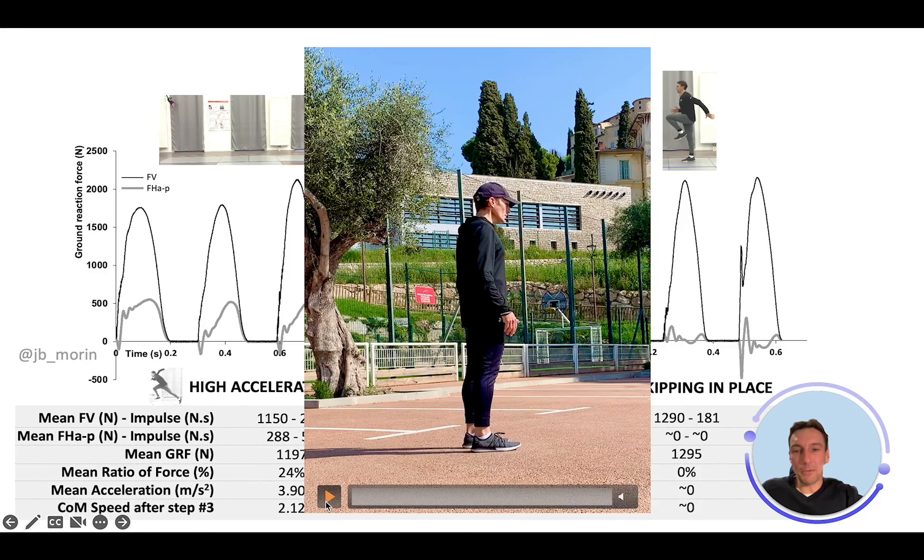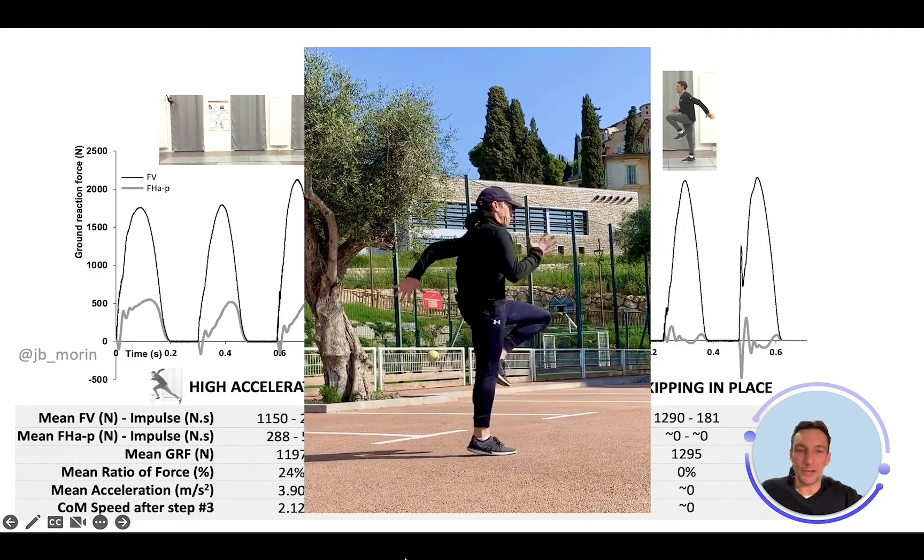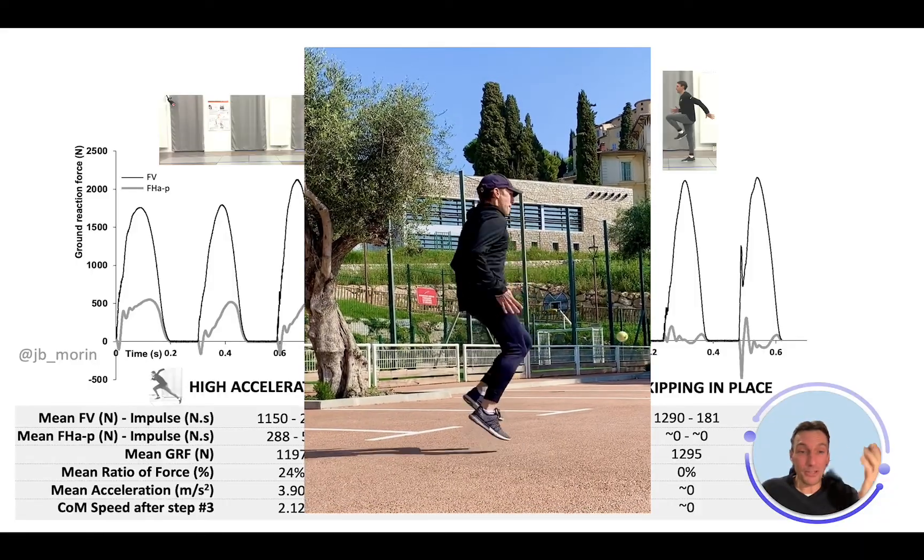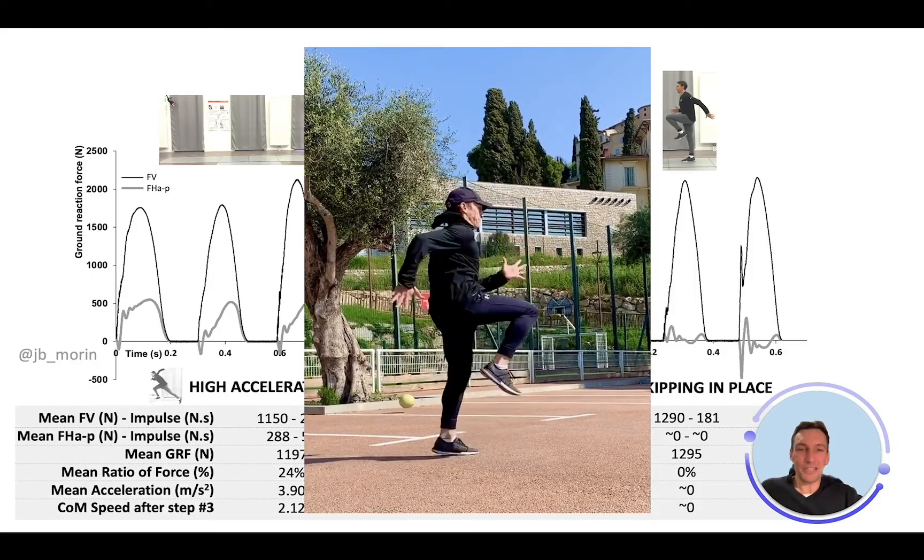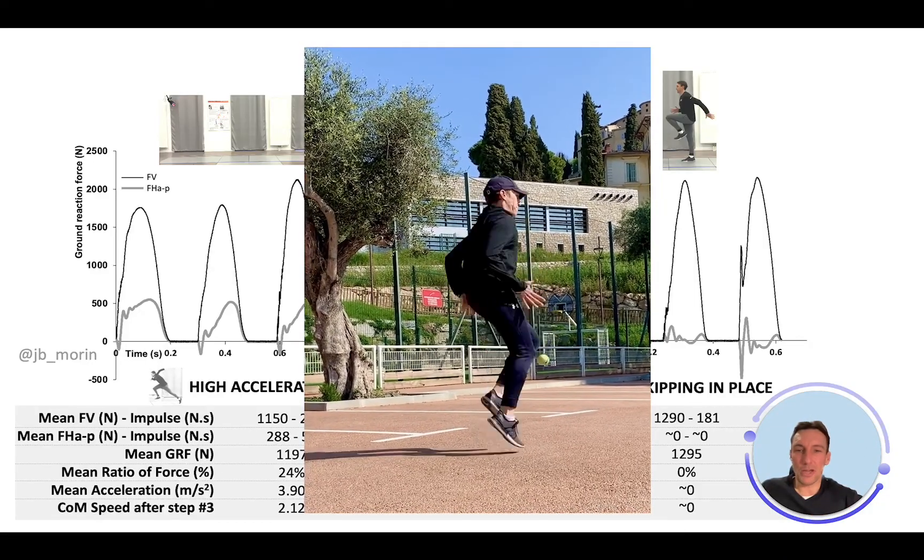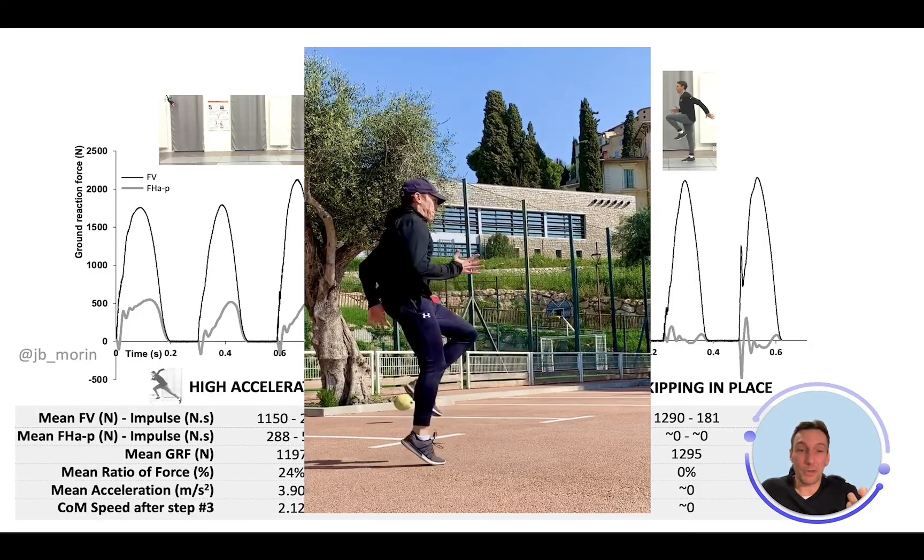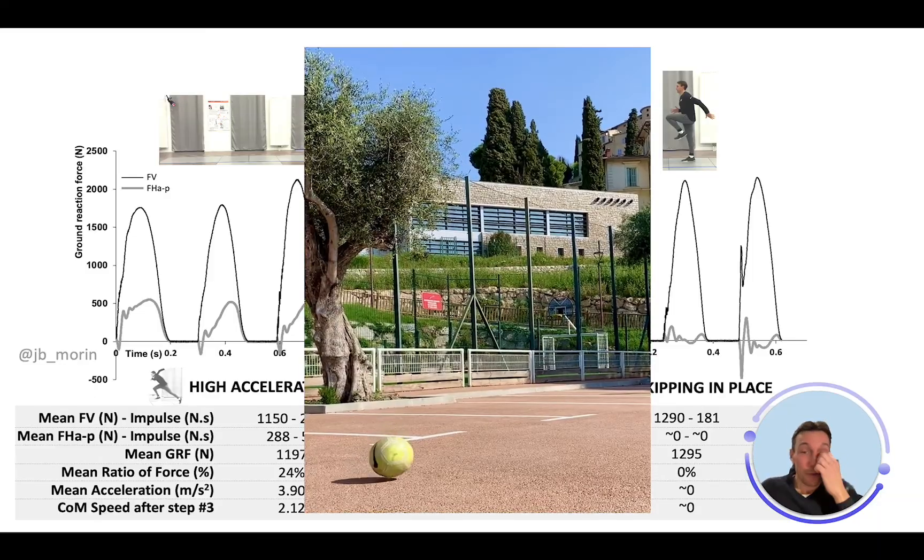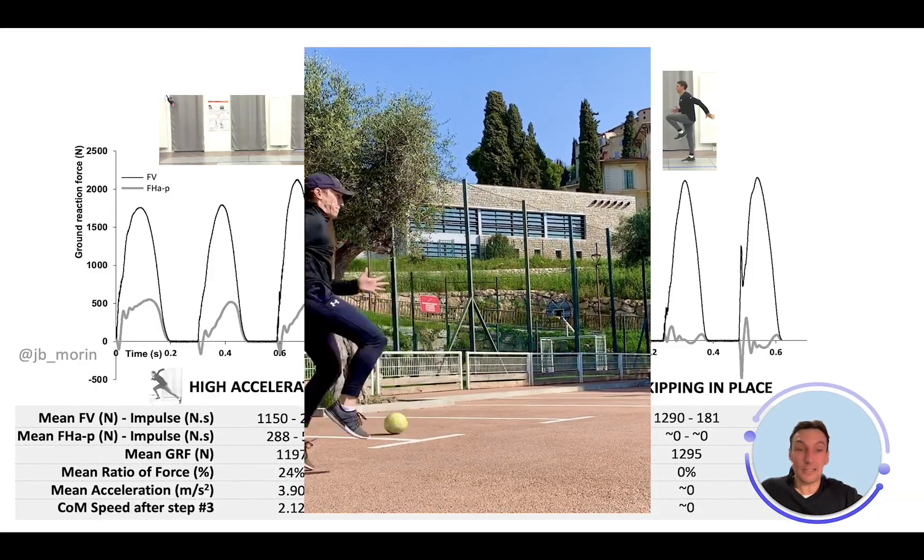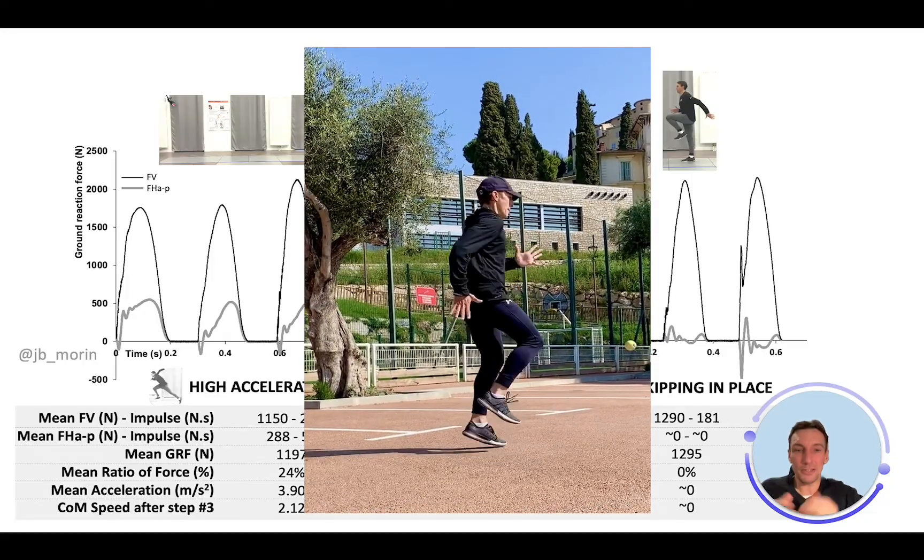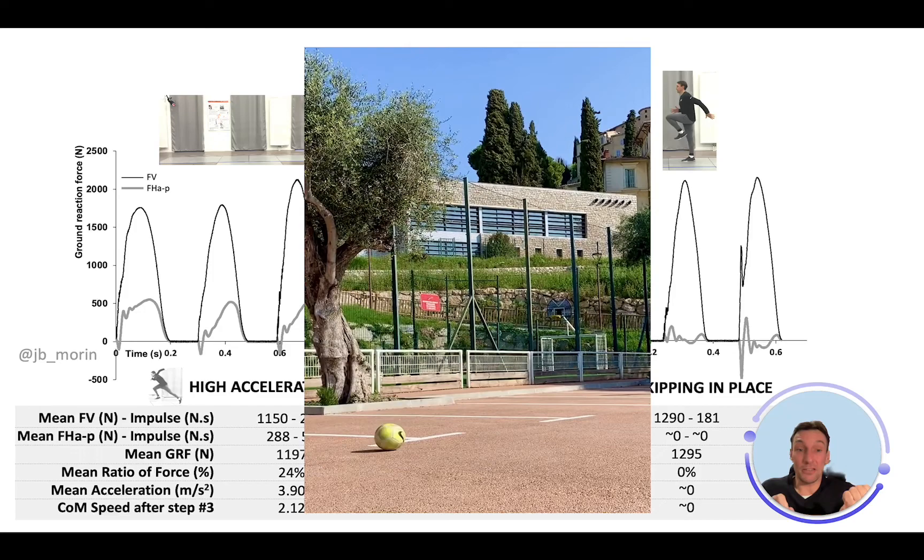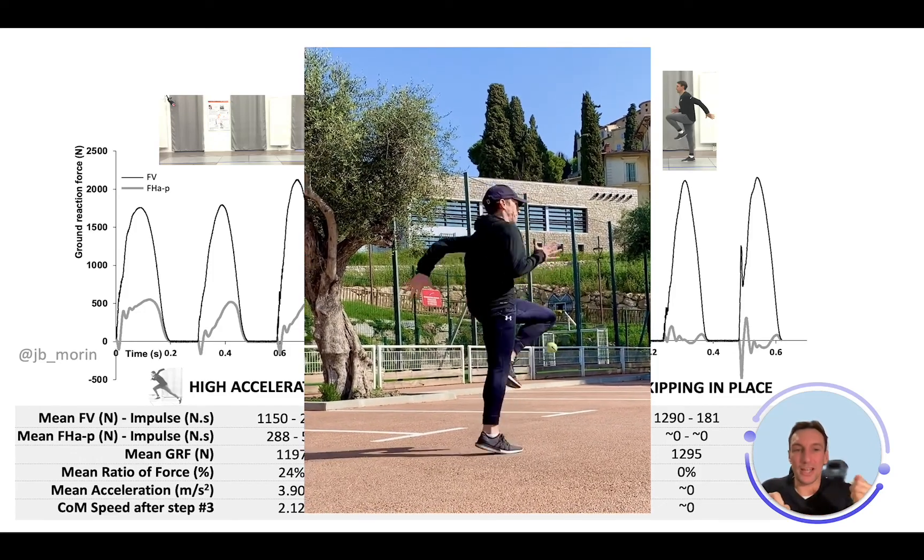I won't go back to the extreme example I showed during the COVID period where I'm not even skipping in place, but actually skipping backwards. There's a huge vertical component of the ground reaction force applied, but that's not what matters. What matters is that my horizontal component is overall negative, directed backwards, and this is what causes my motion backwards.